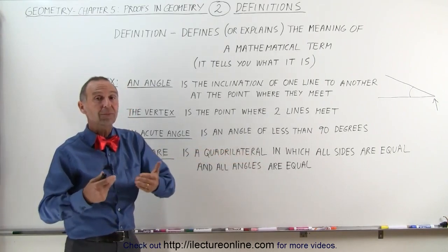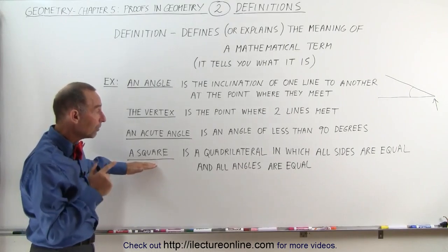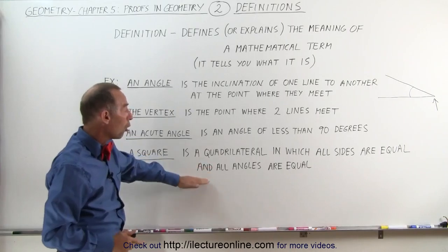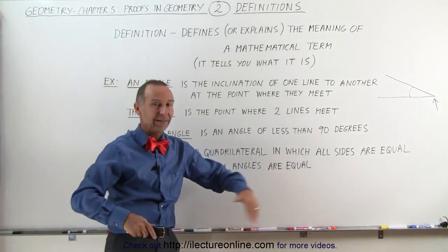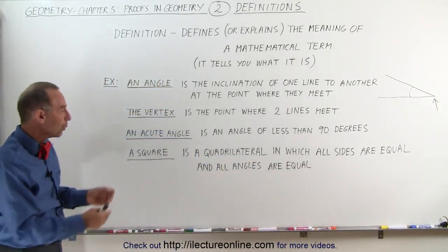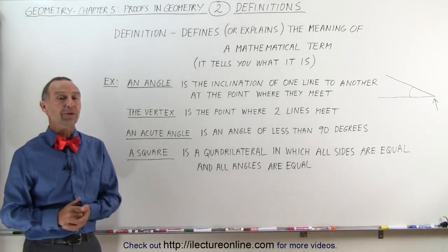So quadrilateral is something that has four sides, which is how you define a square. But with a square, all sides are equal and all angles are equal. And that's simply by definition. We don't need to try to prove that. We define a square as a quadrilateral where all sides are equal and all angles are equal, and we don't need to prove it.